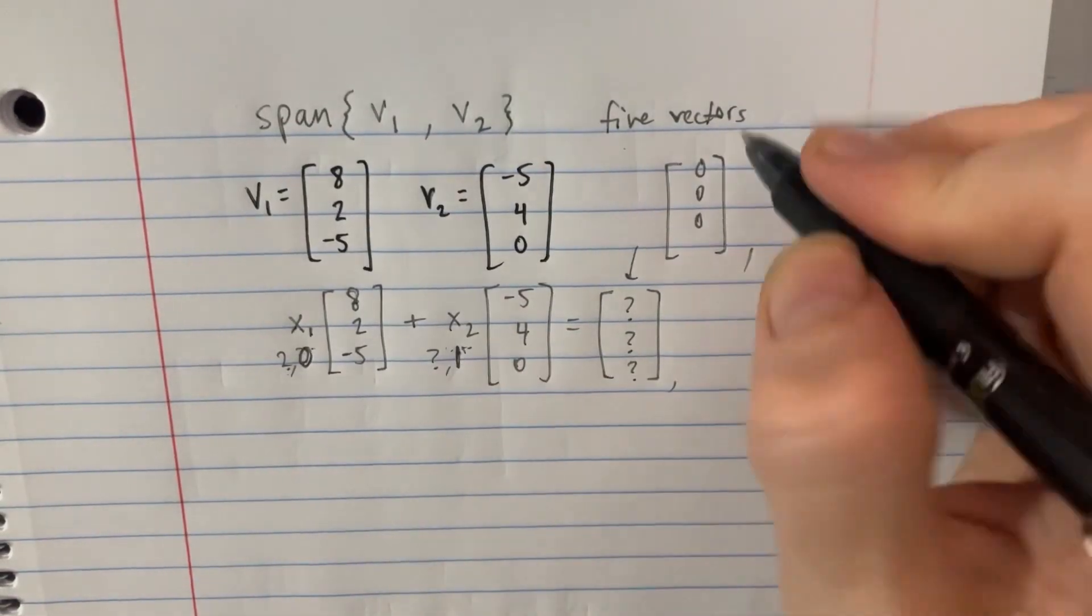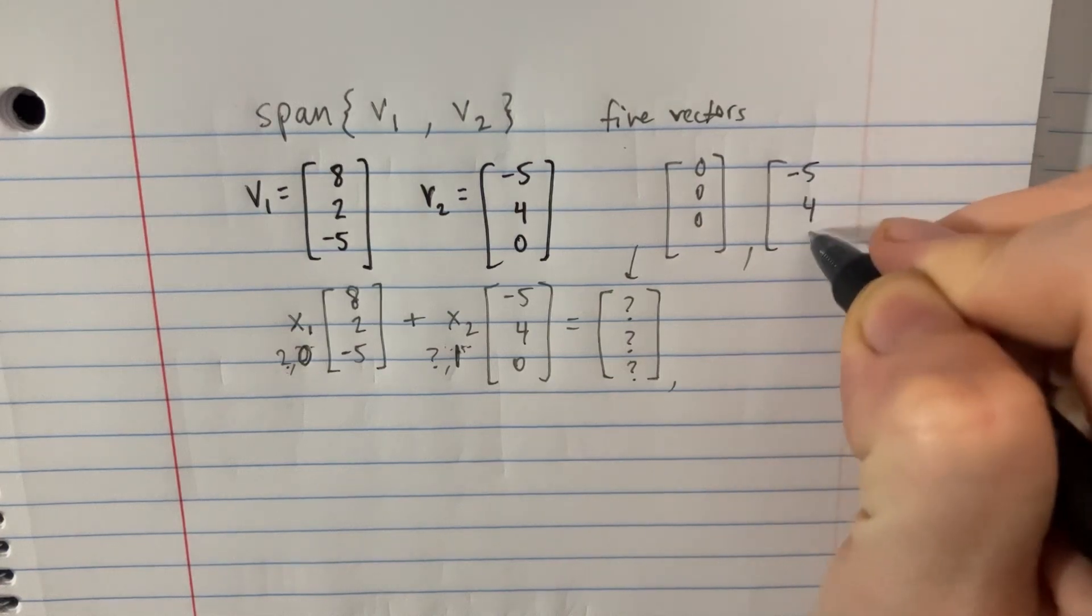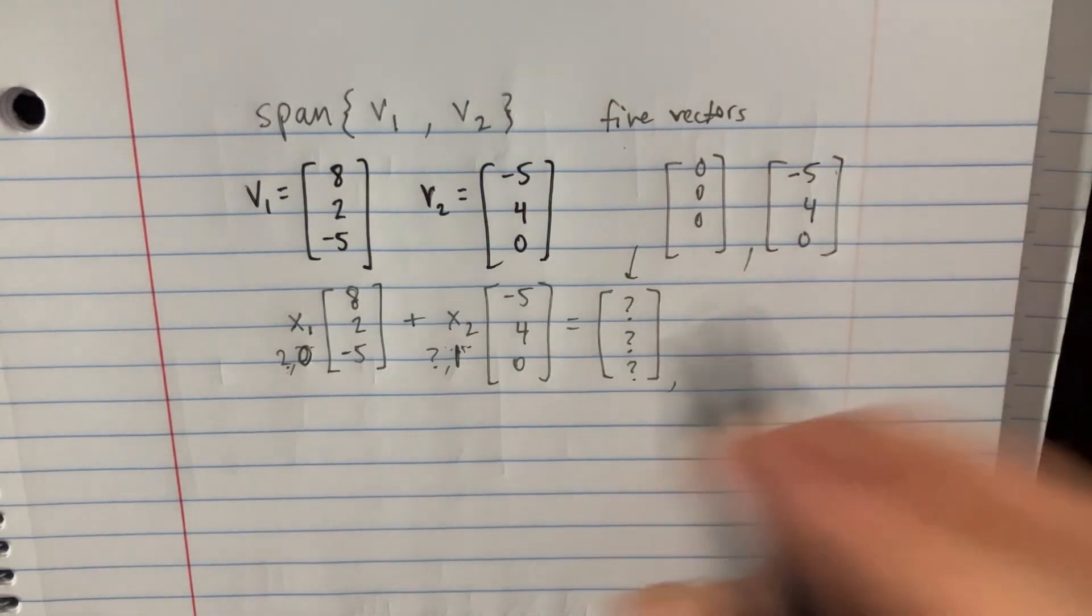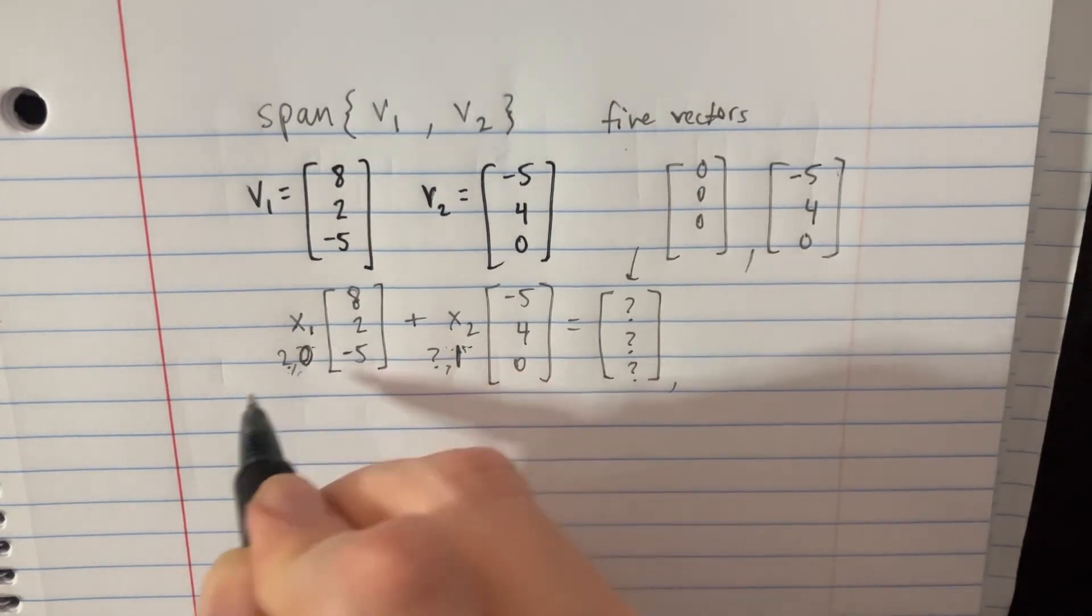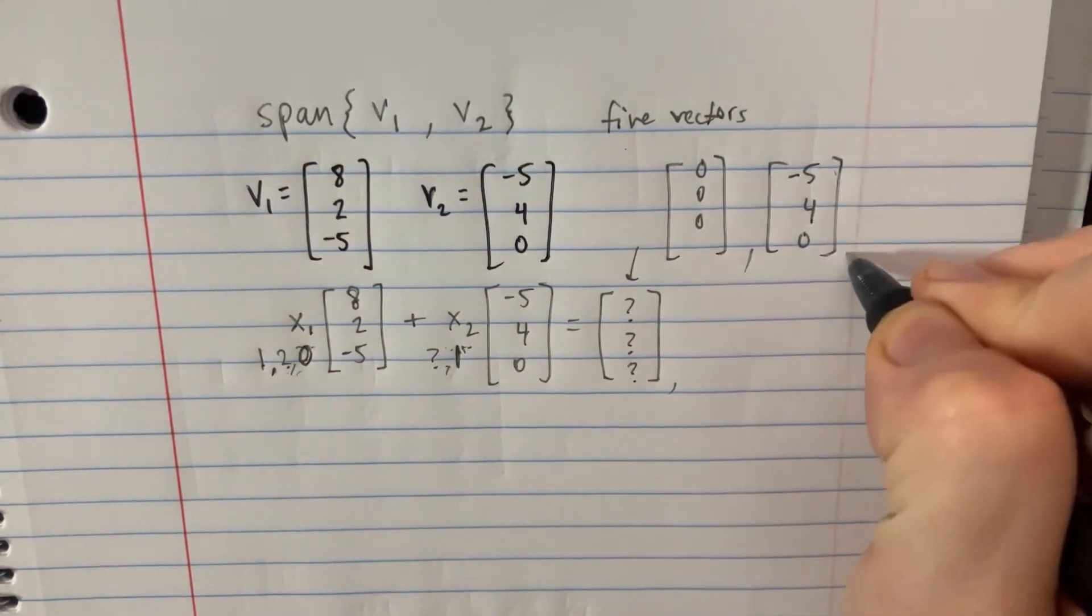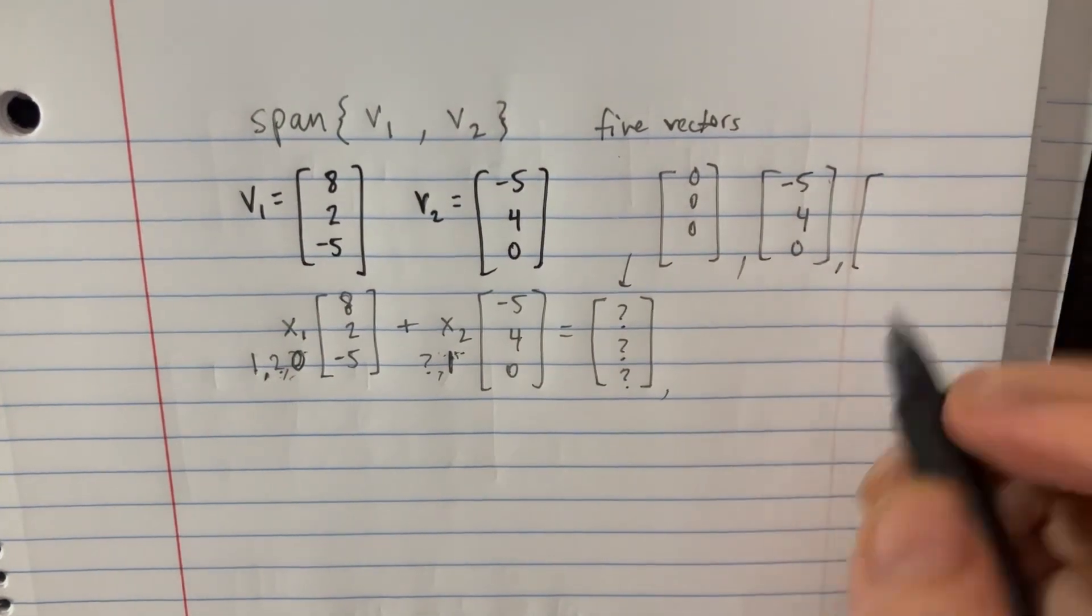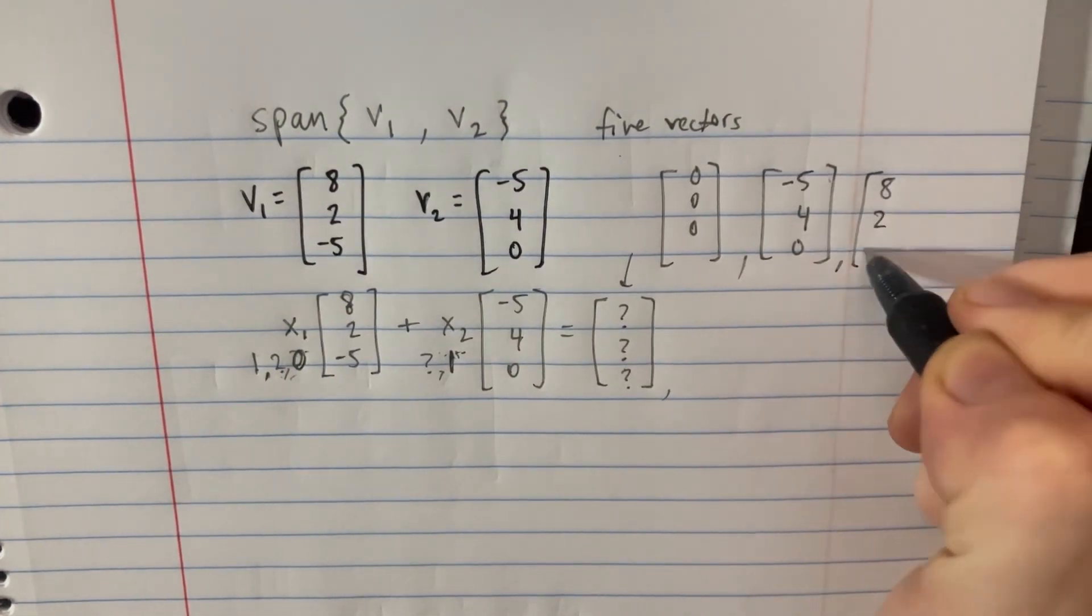But if you have one of them there, then you would end up with this one as being one of your answers. If you have one in each place, then you could add them together. If you just have this one, and this one be 0, then we would get this other answer. You could say 8, 2, and negative 5.